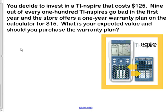You decide to invest in a TI-nspire that costs $125. That's actually the real price of these things. Nine out of every 100 TI-nspires go bad in the first year. Now that's totally made up. Probably isn't that high a percentage. Not many companies would survive if 10% of their calculators died in the first year. The store offers a one-year warranty plan on the calculator for $15, also a little high. If I, in my opinion, the warranty price would probably be more like $8, and the actual number that break would probably be only 3%.